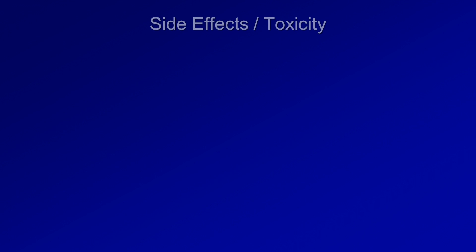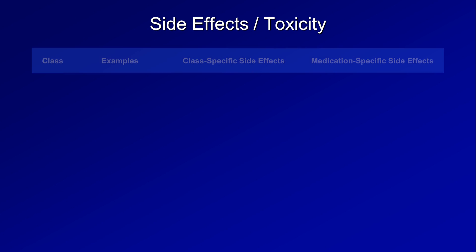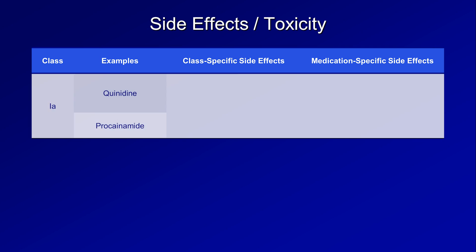Having covered classification, pharmacological effects, and indications, I'll close with side effects and toxicity. Class 1 antiarrhythmics have class-specific and drug-specific side effects. Starting with quinidine and procainamide, on account of their potassium channel blocking activity, they both prolong the QT interval, and they are both negative inotropes, which means they make the heart contract less vigorously.